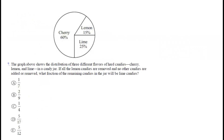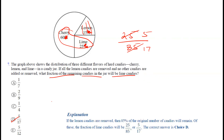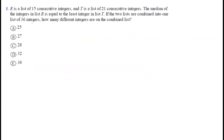Question seven: a graph shows three flavors of hard candies — cherry, lemon, and lime. Suppose there are 15 lemon, 25 lime, and 60 cherry candies. If all lemon candies are removed, the remaining total is 85. The fraction that is lime is 25/85 = 5/17. Option D is correct.